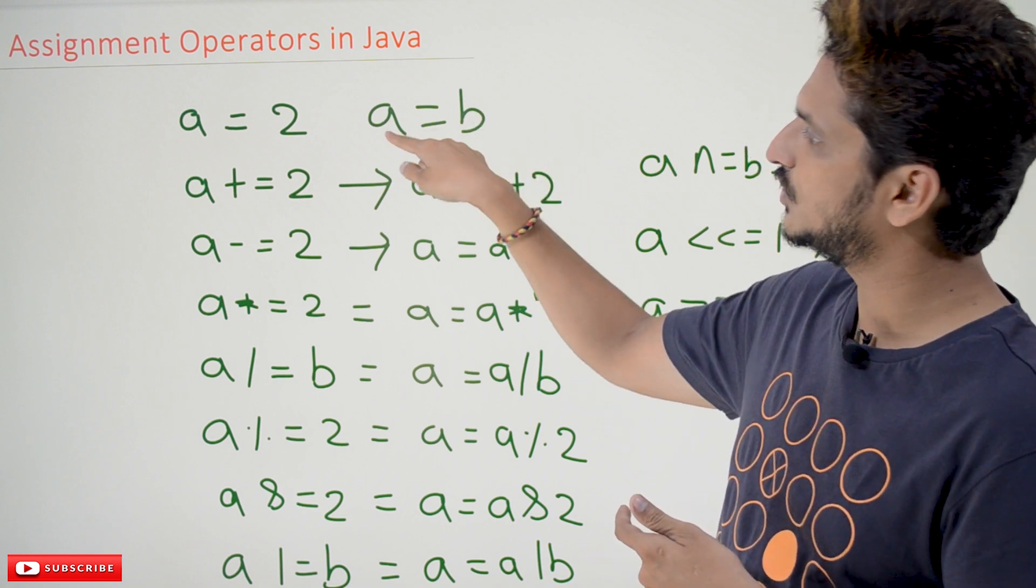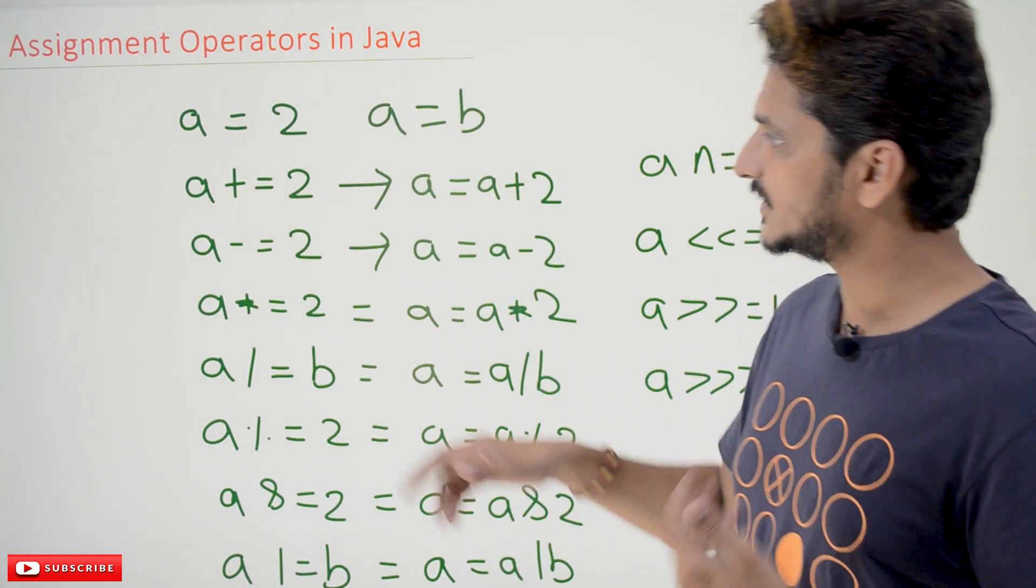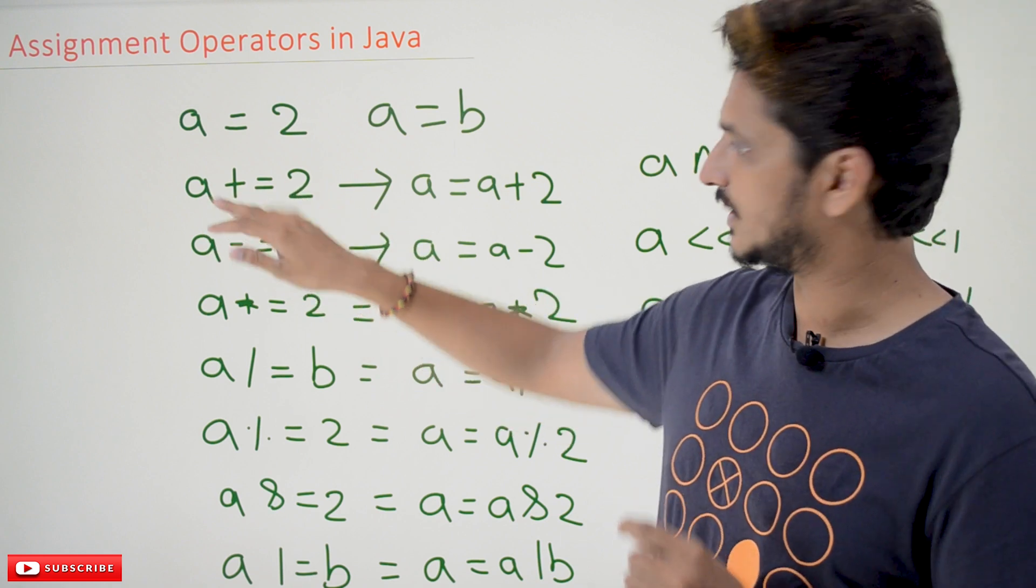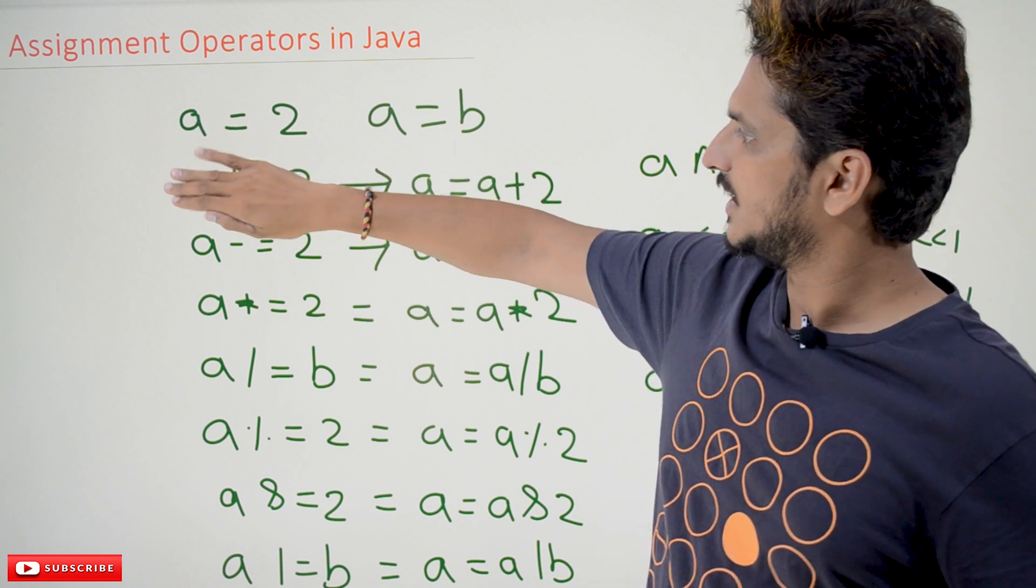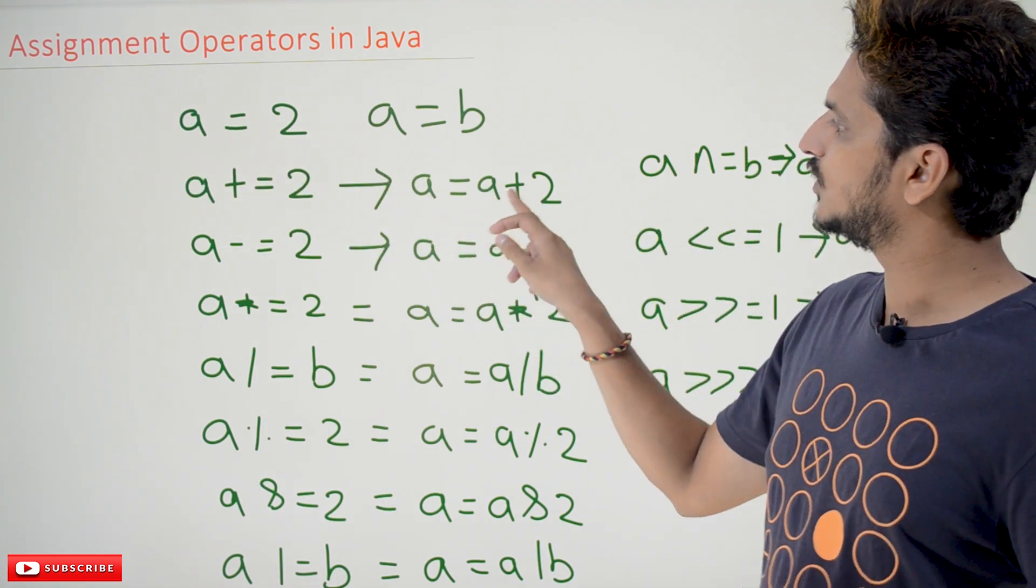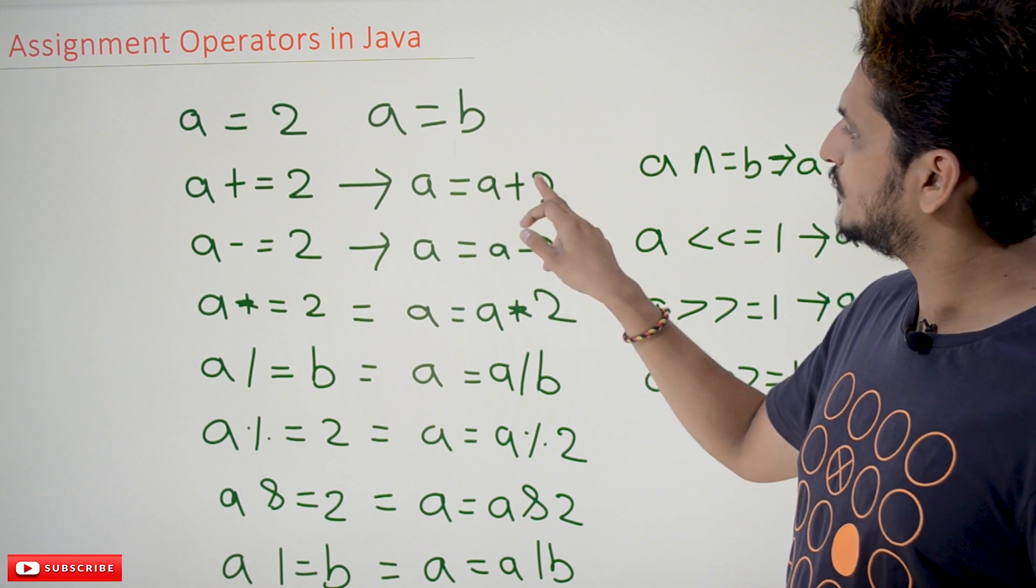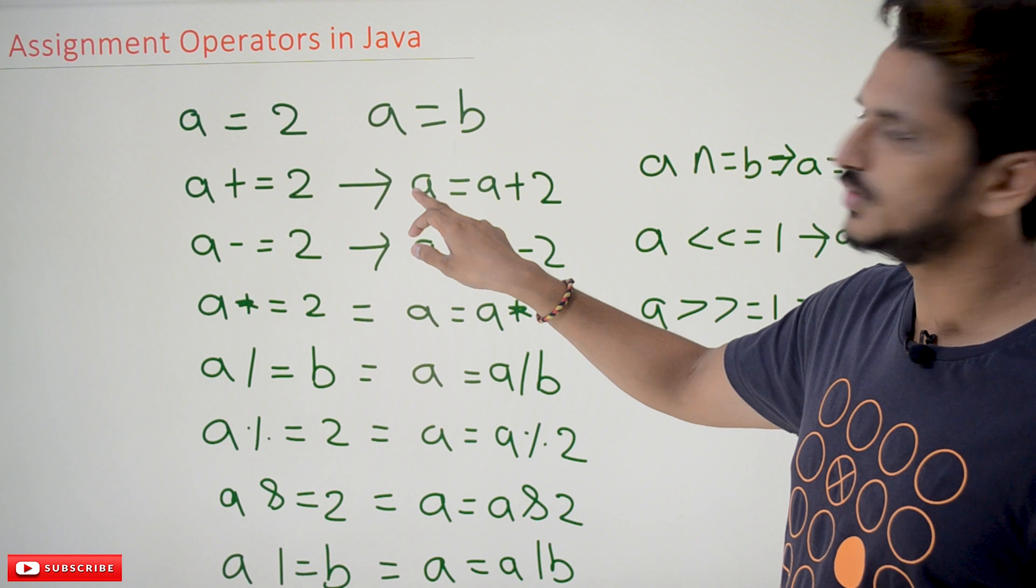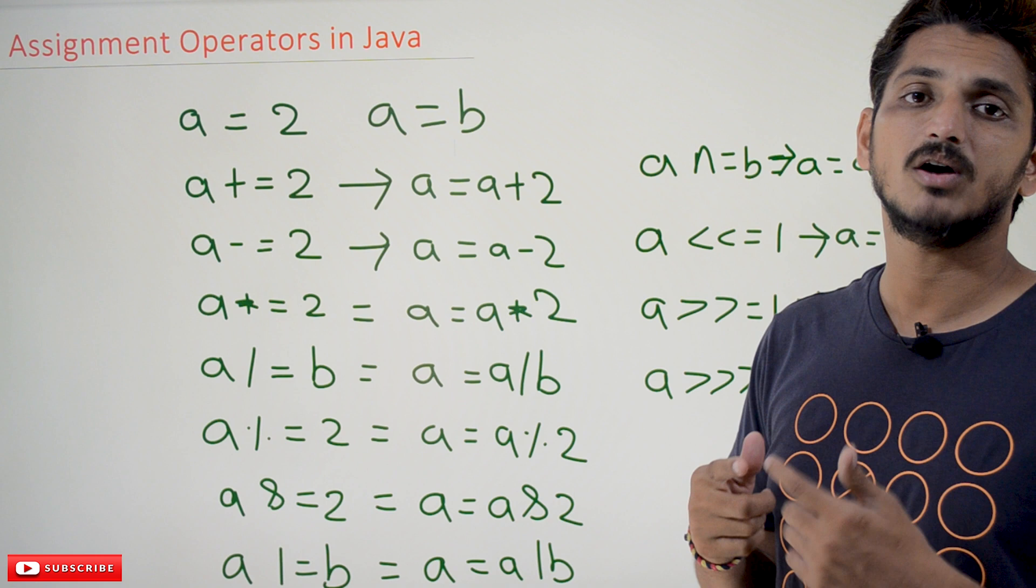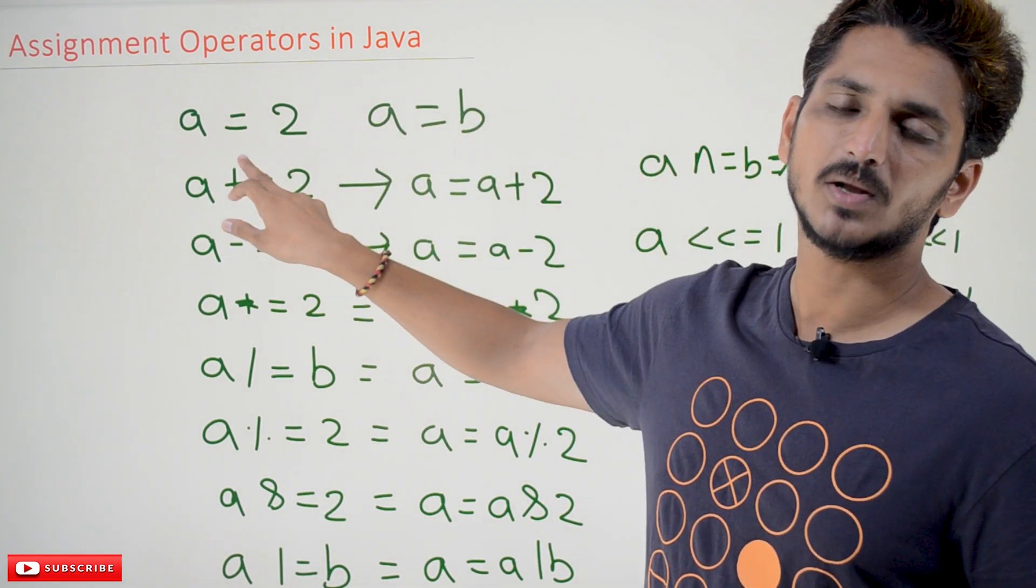Similarly, a equal to b we can write as the value that is present in b is going to be assigned to the variable a. Now coming to the next example, a plus equal to 2. This is also an assignment operator. This is just a shortcut. a plus equal to 2 is exactly the same as a equal to a plus 2. Assume that a is having 5, 5 plus 2 is 7, 7 is going to be assigned to a again. So after executing this statement, a contains the value of 7.